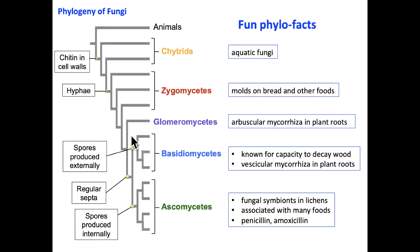The basidiomycetes are best known for their capacity to decay wood, and vesicular mycorrhizae, another form of mycorrhizae, also appear within the basidiomycetes. Lastly, the ascomycetes are key fungal symbionts in a life form known as lichens. Many of the fungi we eat in everyday diets are also part of the ascomycetes, and the antibiotics so important to human health — such as penicillin and amoxicillin — come from groups within the ascomycetes.